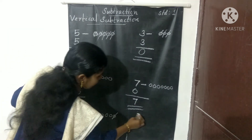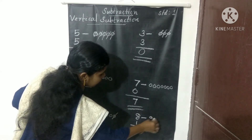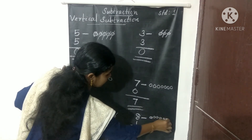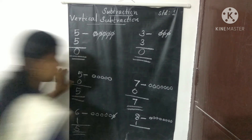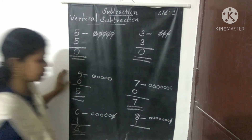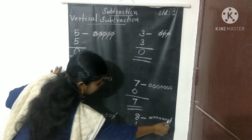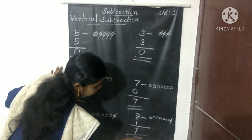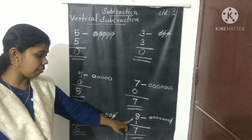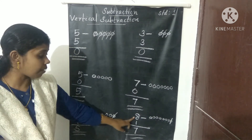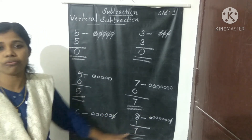Another question: 8 minus 1. Draw 8 beads: 1, 2, 3, 4, 5, 6, 7, 8. Cross out 1. The balance is 1, 2, 3, 4, 5, 6, 7. That is the just-before number of 8. So when 1 is subtracted from any number, the answer is the just-before number.